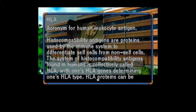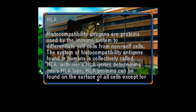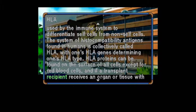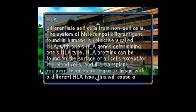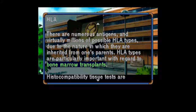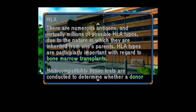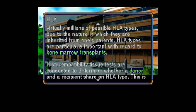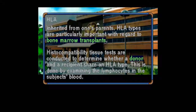HLA: Acronym — that's not under acronyms though. Human Leukocyte Antigen. Histocompatibility antigens are proteins used by the immune system to differentiate self-cells from non-self-cells. The system of histocompatibility antigens found in humans is collectively called HLA, with one's HLA genes determining one's HLA type. HLA proteins can be found on the surface of all cells except for red blood cells. If a transplant recipient receives an organ or tissue with a different HLA type, this will cause rejection whereby the body attacks the cells of the graft organ, which it considers an invader. There are numerous antigens and virtually millions of possible HLA types. HLA types are particularly important with regard to bone marrow transplants. Histocompatibility tissue tests are conducted by examining the lymphocytes in the subject's blood.